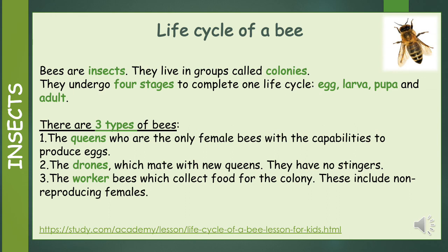There are three types of bees. The first is the queens, who are the only female bees with the capabilities to produce eggs. Second, the drones, which mate with new queens. These are bees that have no stingers. And third, the worker bees, which collect food for the colony. These include non-reproducing females, that means females that do not lay eggs.